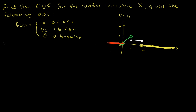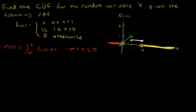Let's start with the first interval, negative infinity to 0. By definition, the CDF is the integral from negative infinity to t of f of x dx. We use t instead of x because we already used x in the PDF. When t is between negative infinity and 0, f of x is 0, so integrating 0 gives 0.